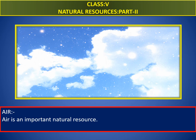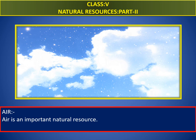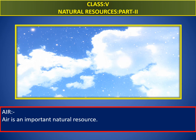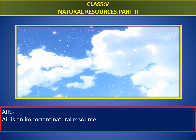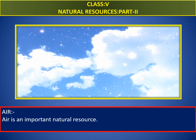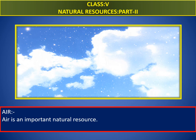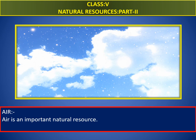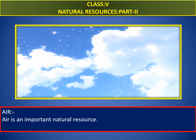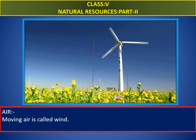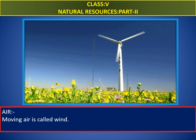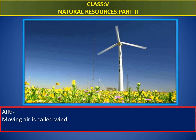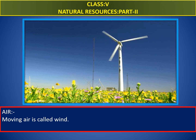Now let us learn another renewable resource: air. We breathe air, so it is useful to us because we would suffocate without it. All the air on earth together is called the atmosphere. It protects us from harmful space radiation and from most meteors, which burn up in the atmosphere. Also, the atmosphere traps heat from the sun, which up to a point is very useful. Moving air is called wind. One of the most popular uses of wind energy is to generate electricity.